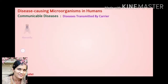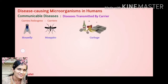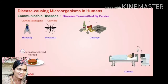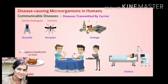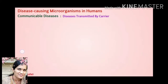Next are communicable diseases caused by carriers. The most common carriers are housefly and mosquito. These carry protozoans which cause infection in the human body. When they sit on garbage, they carry those infection-causing protozoans. When they then sit on food, they transfer those infection-causing microorganisms to the food. When we consume that food, we suffer from cholera or other diseases caused by the pathogen. Preventive measure: always cover cooked food.